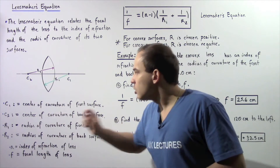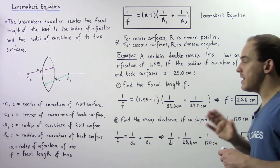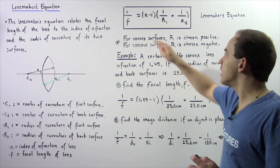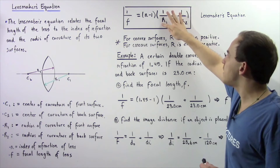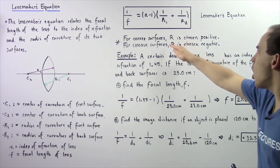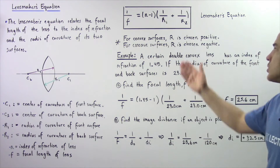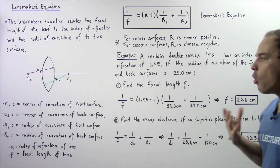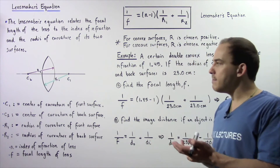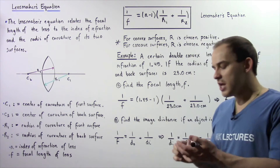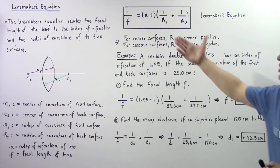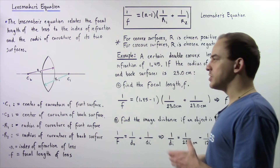Now that we have defined our quantities, the lens maker equation states that 1 divided by the focal length is equal to (N − 1) multiplied by (1/R1 + 1/R2). For convex surfaces, R is chosen to be positive; for concave surfaces, R is chosen to be negative. Although we won't derive this equation here, it can be derived using Snell's law and geometry, under the assumption that the lens is very thin. Let's look at an example to see exactly how this equation is used.